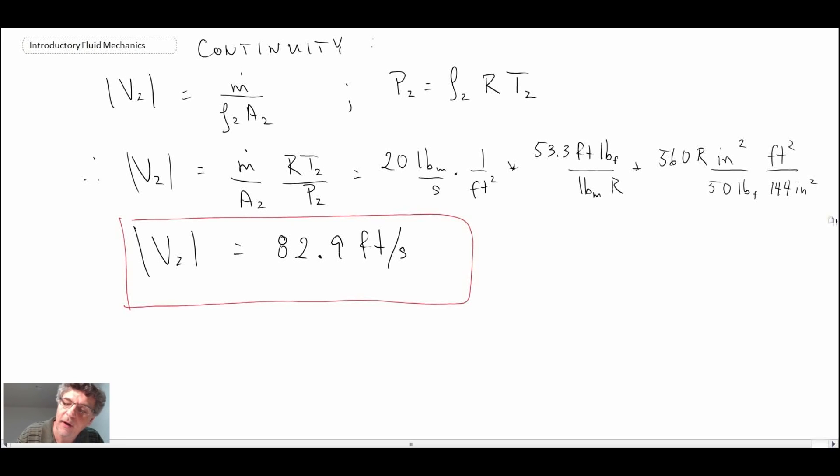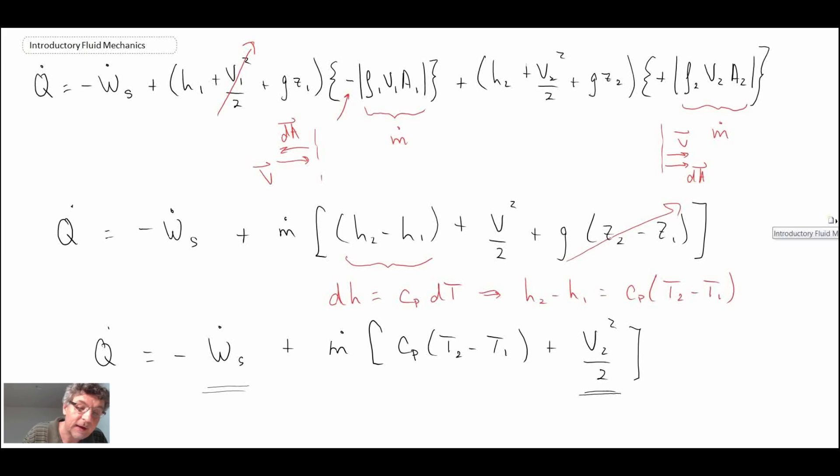Now that we know that, what we can do is go back to our first law. Let's look at it here. So this was the formulation. We know velocity, and we have pretty much everything else. We know the mass flow rate, cp we can look that up for air, we know the temperature change, we know the work. We can calculate everything. Again, the biggest challenge is going to be dealing with the units, so let's go through and see what we get.